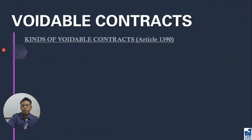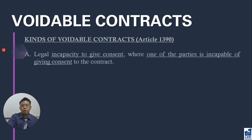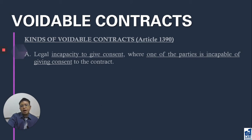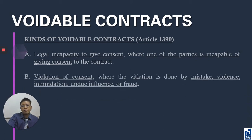The kinds of avoidable contracts: there are two kinds. Number one, contracts where there is legal incapacity to give consent on the part of one of the contracting parties — the incapacity exists due to minority, insanity, or whatever other form of incapacity. Number two, in case there is a violation of consent on the part of one of the contracting parties — if there is mistake, violence, intimidation, undue influence, or fraud.